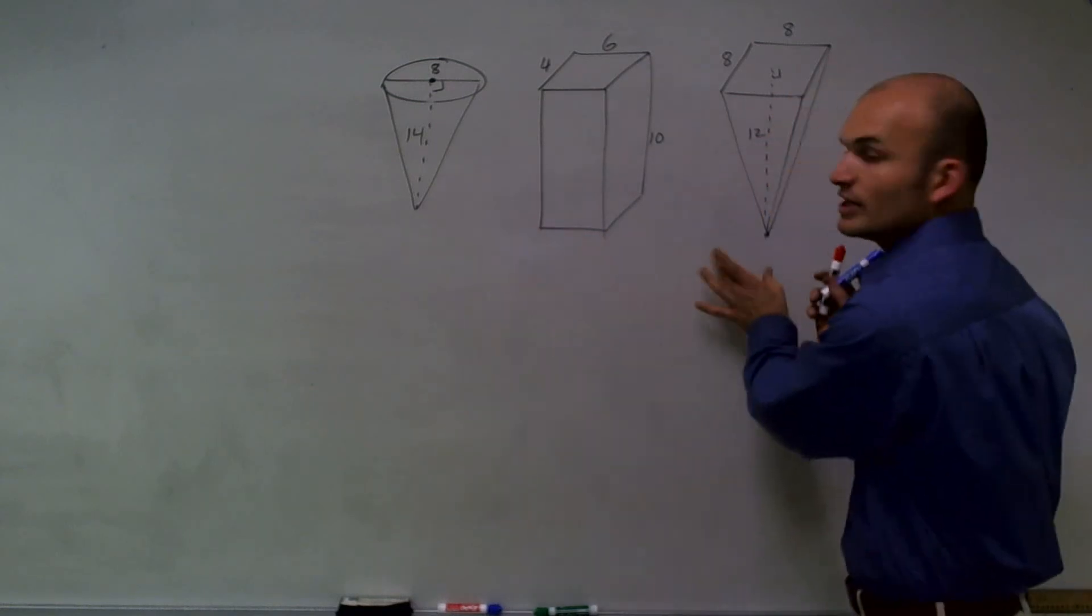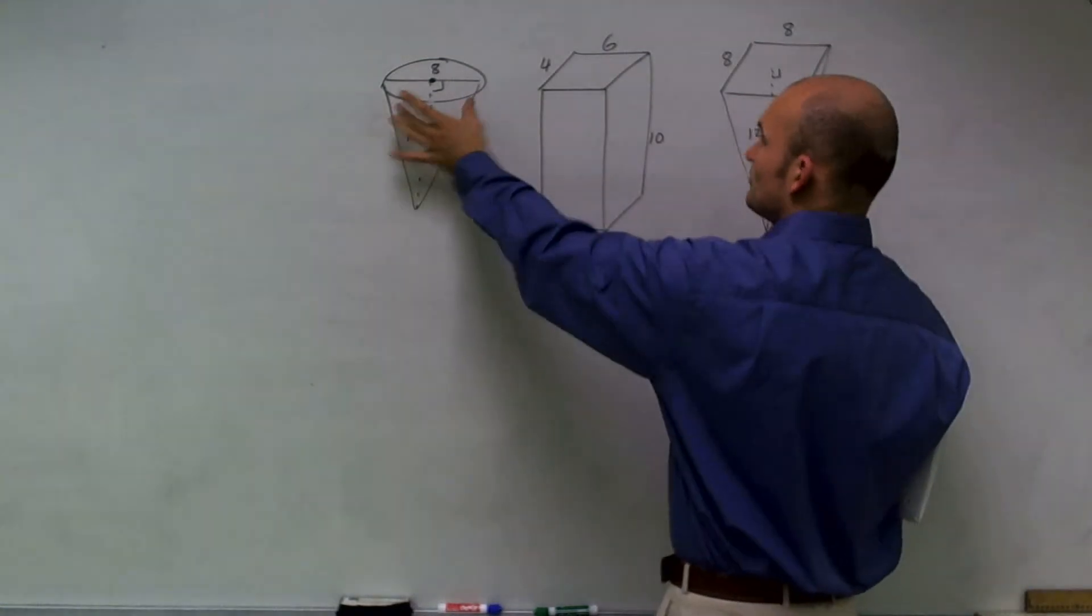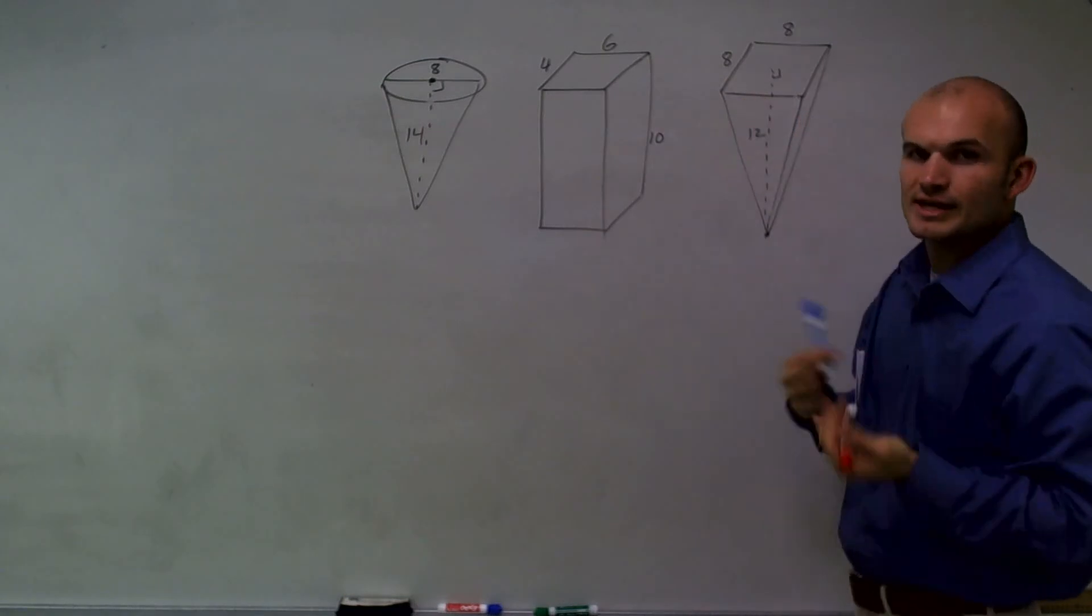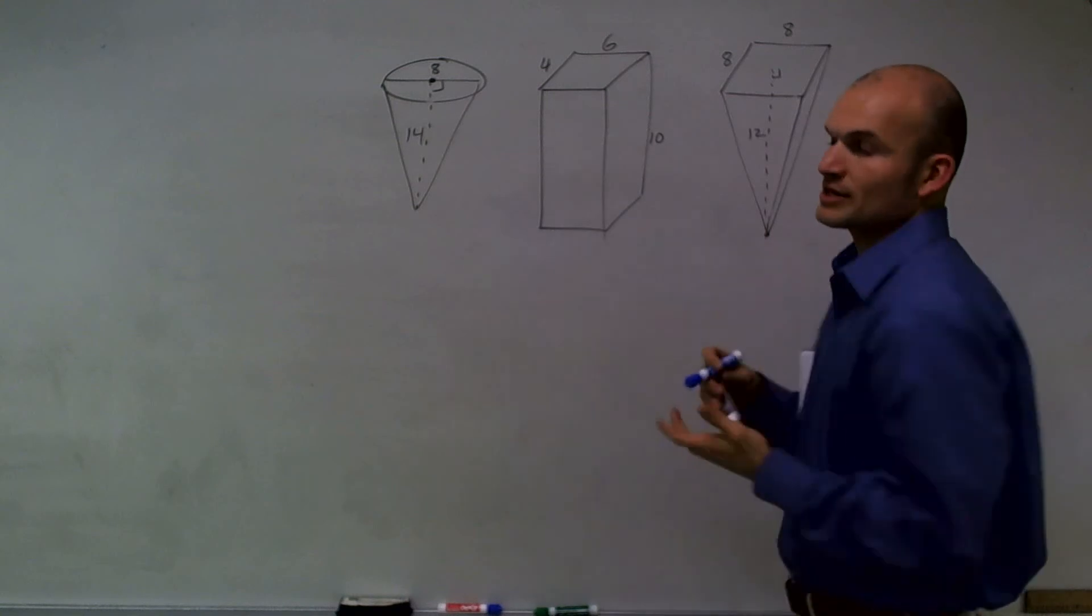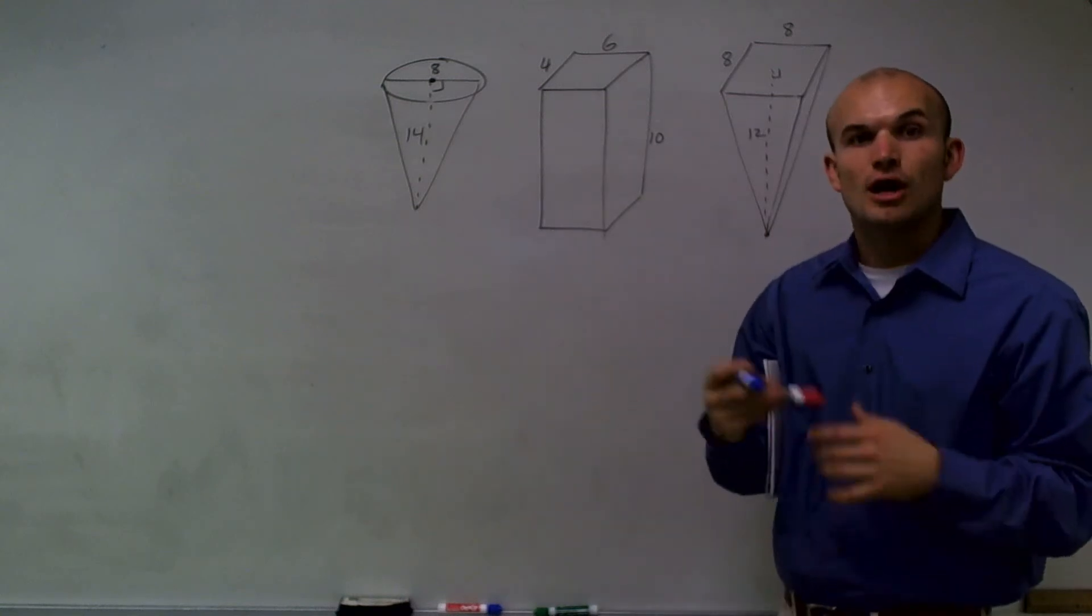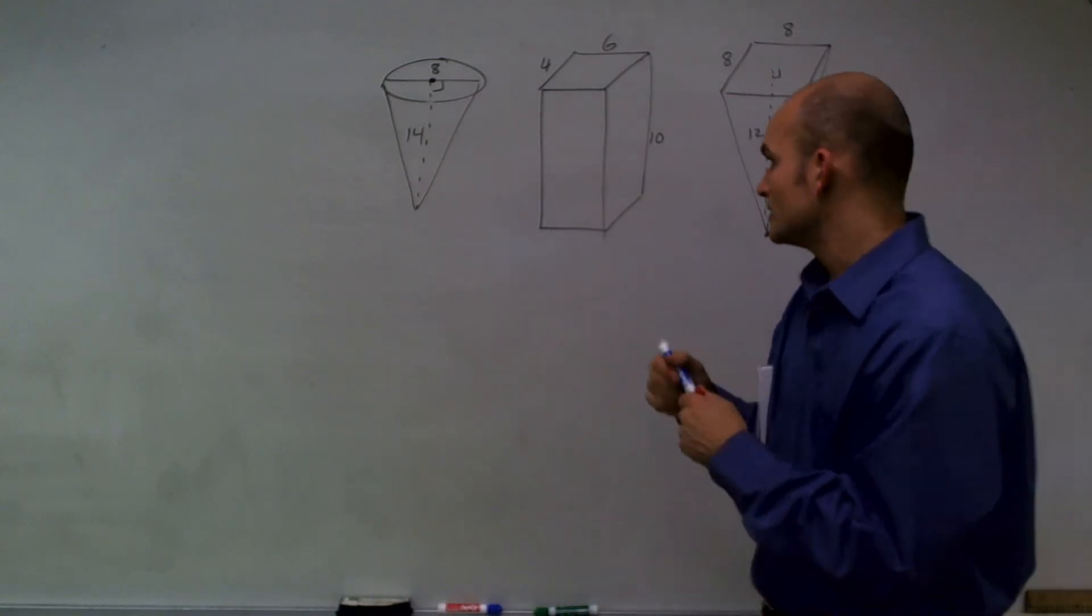Now, these two are what we call pyramids. This one has a circular base, and this one has a square base. The only difference with these pyramids is we're actually going to be multiplying one-third of the area of our base times height.